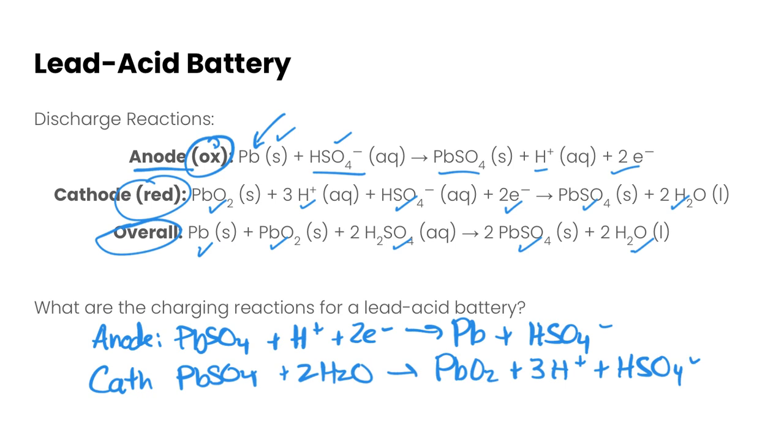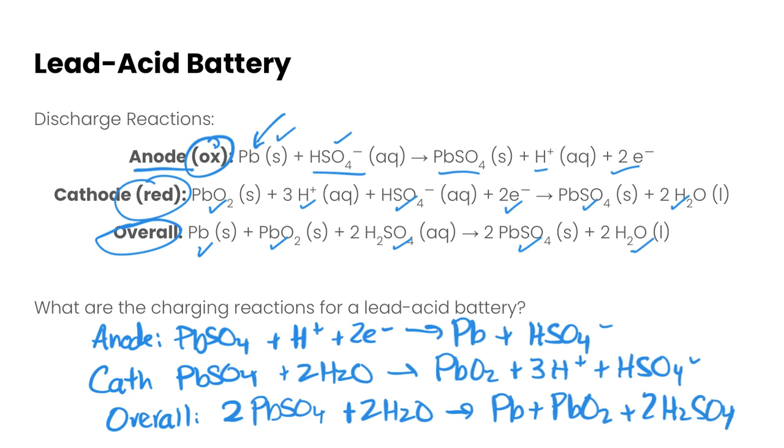So overall our reaction would be the reverse of what we've got here so overall for the charging reaction we have two PbSO4 we have two waters and that's going to create Pb PbO2 and two HSO4s. Okay so charging reactions are essentially just the opposite of our discharge reactions with the same thing happening at the anode and the cathode.